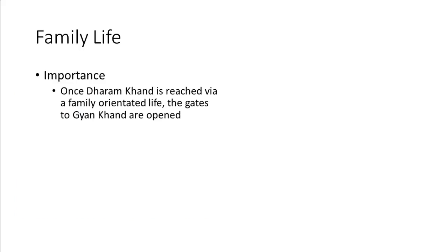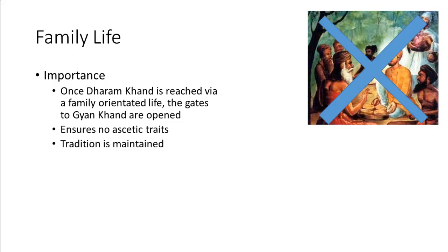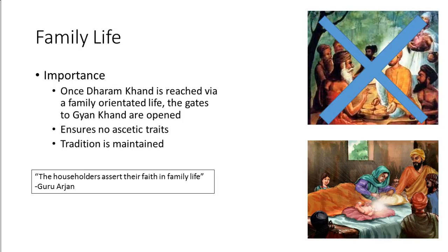Regarding the importance of family life: once the first Khand is reached through the family-orientated life, the gates to the second Khand — Gyan Khand — are open. It ensures that there are no ascetic traits going on in the family. Tradition is maintained, which is a very important one. And there's a quote: 'The householders assert their faith in the family life' — from Guru Arjan — about not going off into the wilderness and being an ascetic.